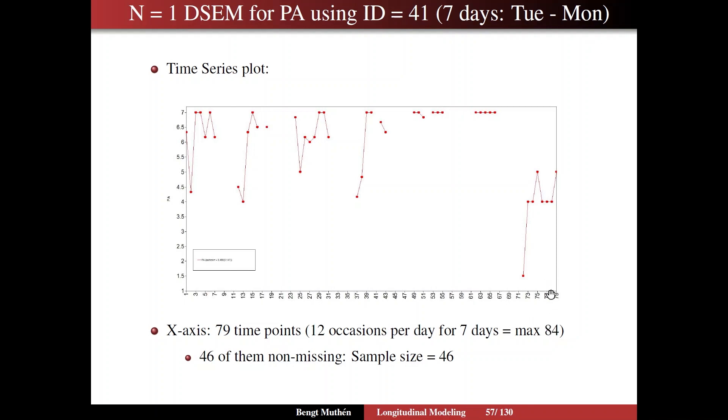This person didn't record all the way up to that time point. However, even though there are 79 time points, only 46 of them are not missing. Rest is missing. So the effective sample size for this analysis is 46. But that's still okay, since we are analyzing or estimating only three parameters. Sample size 46 for three parameters should be just fine.